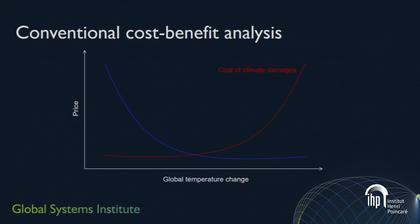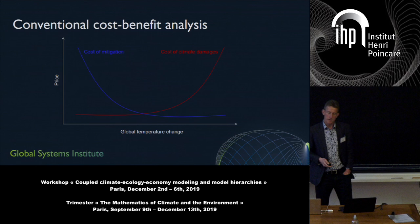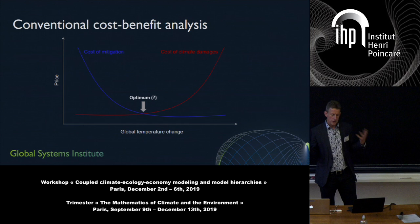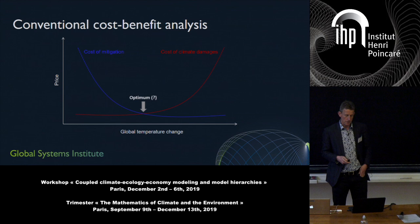There's also an assumption that it's going to cost more the lower you want to hold the global temperature — that's the cost of mitigation. The lower you want to hold the temperature, the more expensive it's going to be. In a conventional inverse approach to cost-benefit analysis, assuming perfect knowledge and rationality, you just find the optimum — the minimum of the sum of the two cost curves.